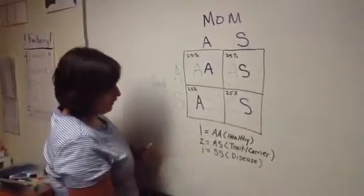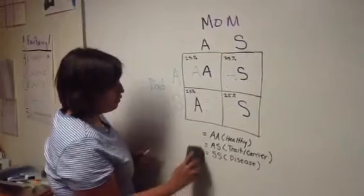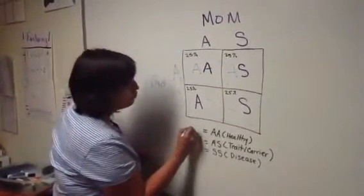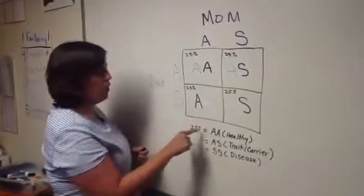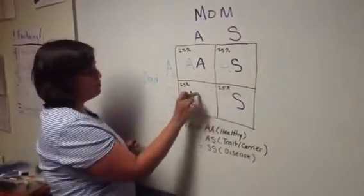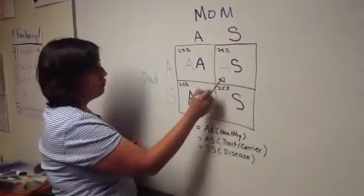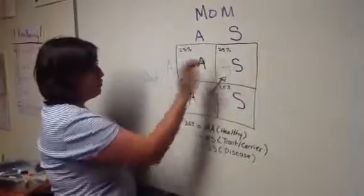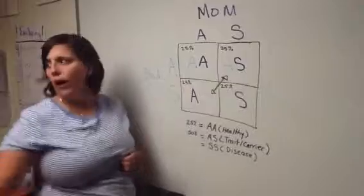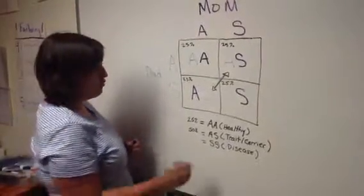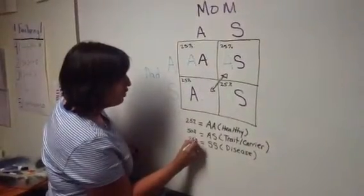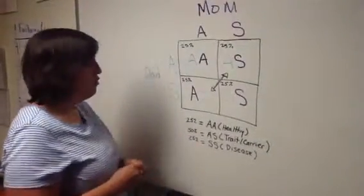Since there's only one box for AA, I have a 25% chance of my child picking healthy hemoglobin. AS, there were two boxes, so 25 and 25 is 50, so I have a 50% chance that my child will have sickle cell trait. And there's only one box of SS, so that meant I had a 25% chance that my child would have sickle cell disease.